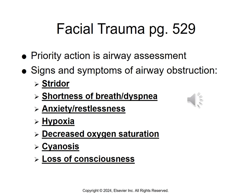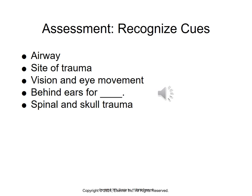Facial trauma priority is always the airway. Assess for signs and symptoms of airway obstruction: stridor, shortness of breath, increased restlessness and anxiety, evidence of hypoxia, decreased O2 saturation, cyanosis (a late sign), and loss of consciousness. Further assessment includes checking for soft tissue edema, facial asymmetry, pain, and leakage of spinal fluid — using the halo sign method to assess for CSF and possible skull fracture. Assess vision and eye movement for possible orbital or maxillary fractures, and check behind the ear for bruising known as Battle's sign, indicating skull fracture and possible intracranial trauma.